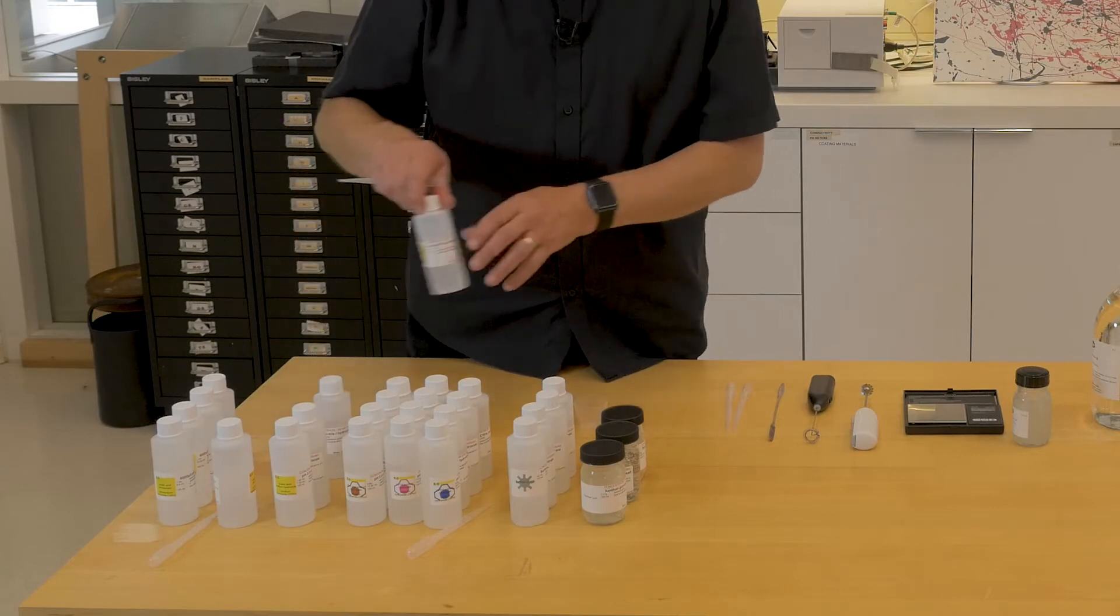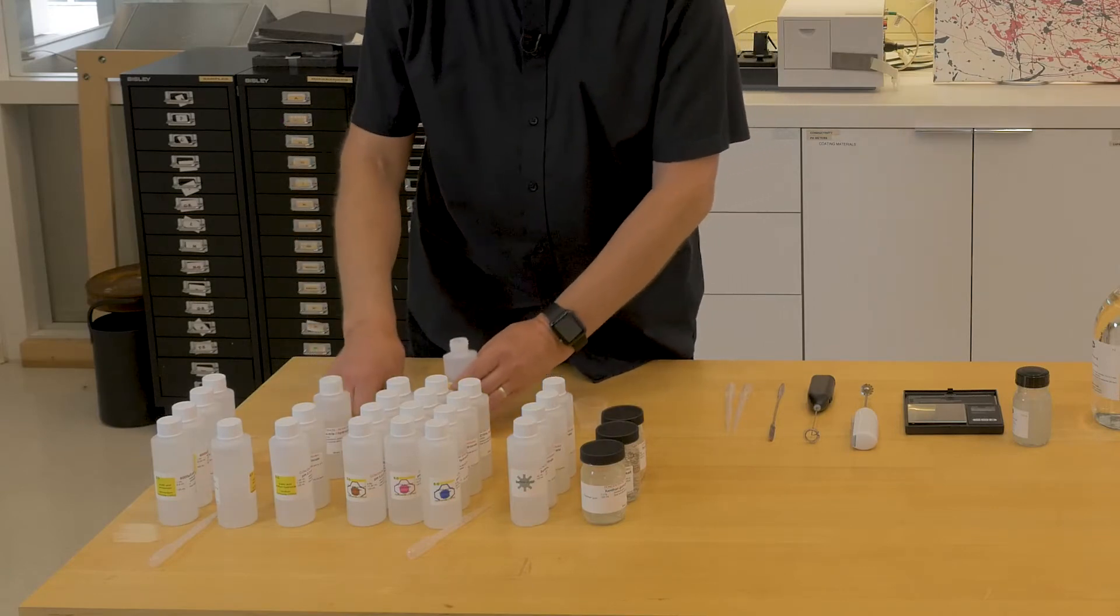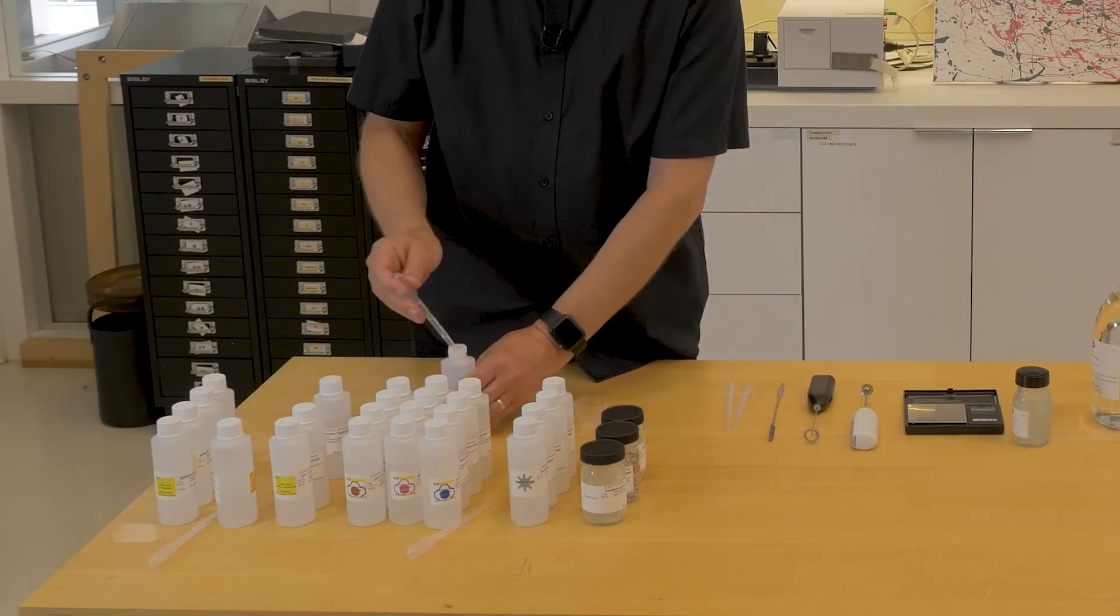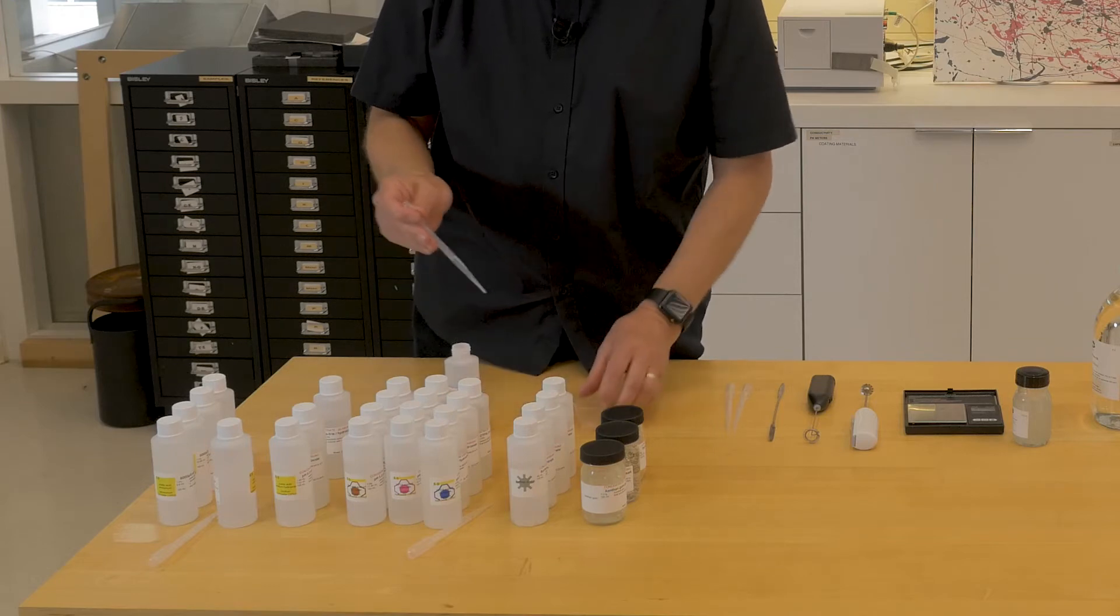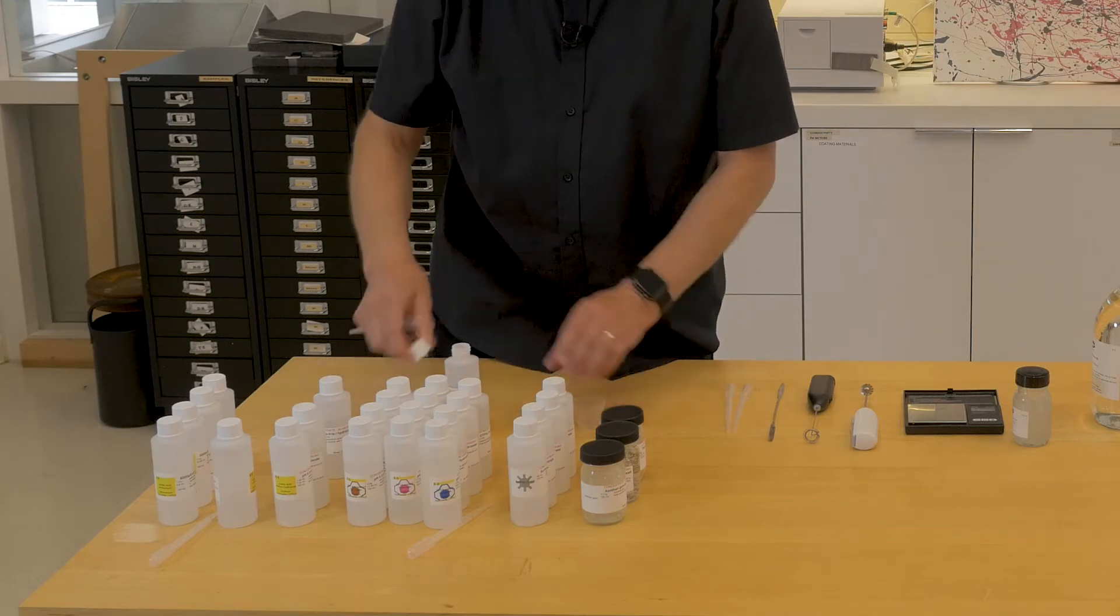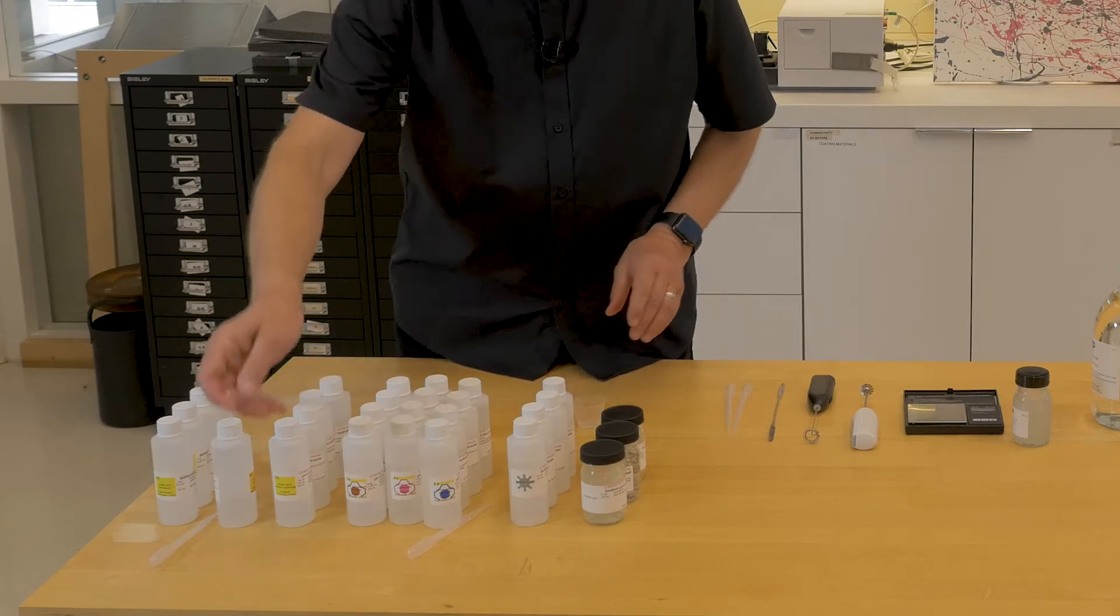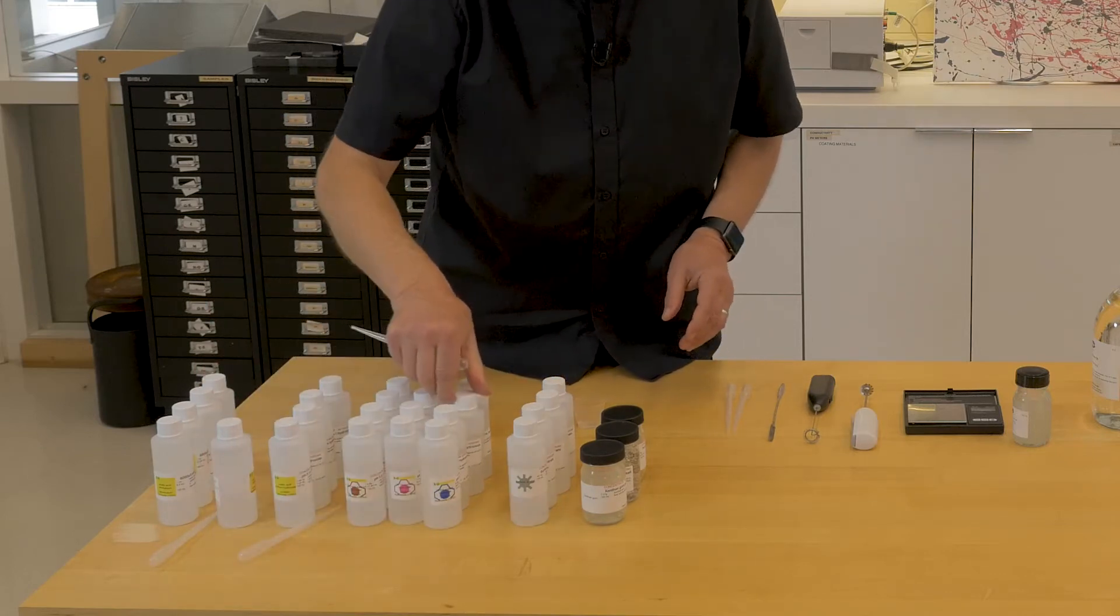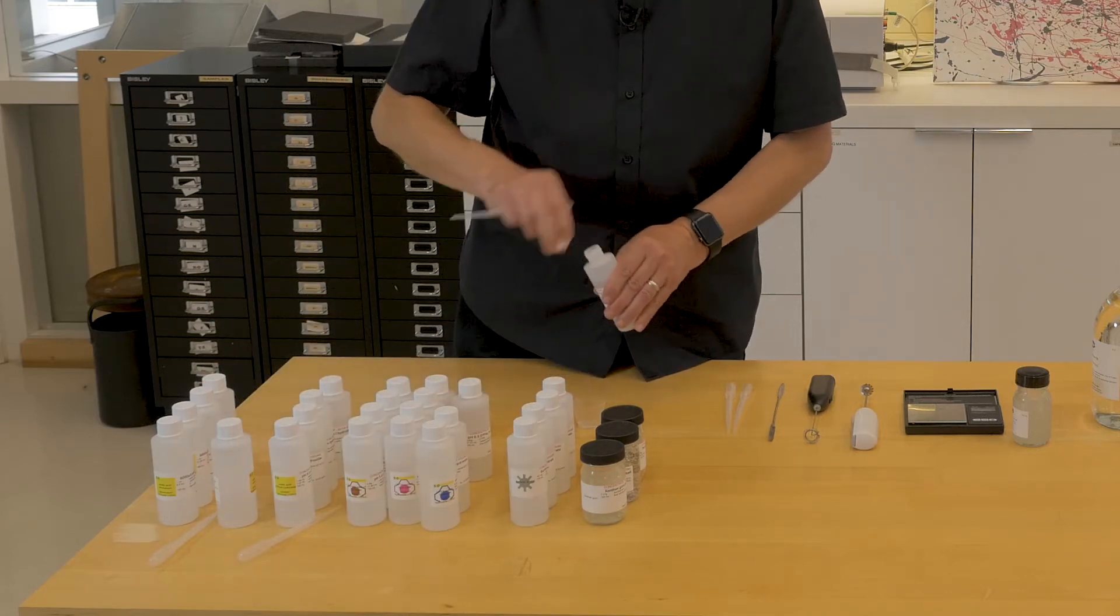So, we take 1 ml of pH 6.0 buffer, MES, 1 ml of DTPA at pH 6.0, our chelating agent.